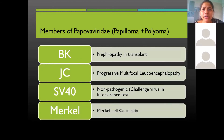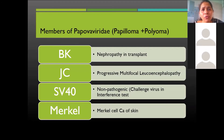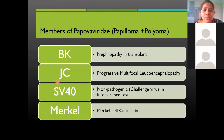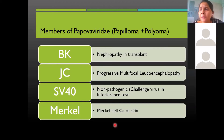In Polyomavirus there are different strains: BK virus causes nephropathy in transplant patients; JC virus leads to Progressive Multifocal Leukoencephalopathy (PML); SV40 does not cause human infections but is used as a challenge virus in the interference test for viruses that don't produce cytopathic effects; and Merkel virus is associated with Merkel cell carcinoma and is a high inducer of interferon.